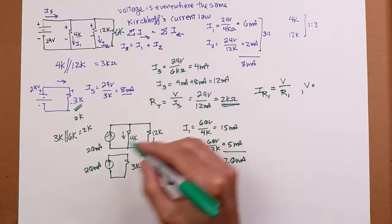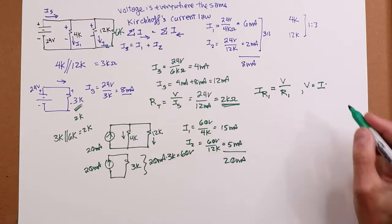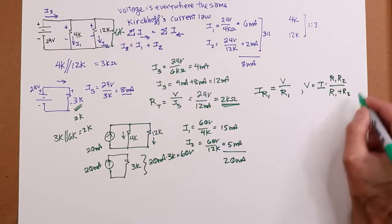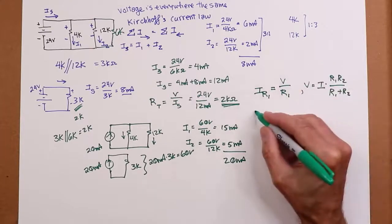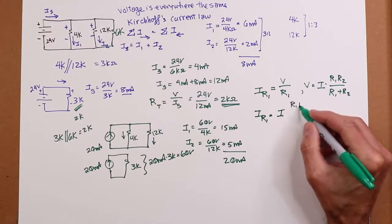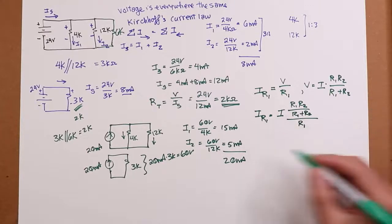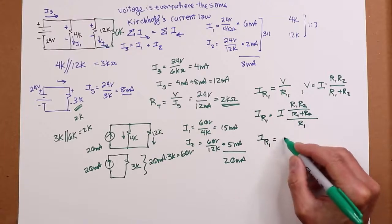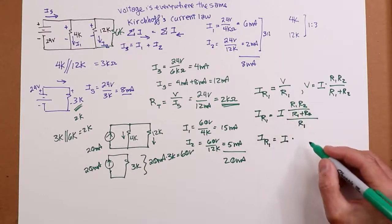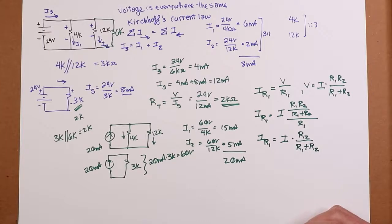V is the effective resistance times the current source. So the entering current times the parallel combo, which I'm going to write that in product sum rule form, R1 R2 over R1 plus R2. Now, if you substitute this in for V, your I of R1 works out to that current times R1 R2 over R1 plus R2, that whole thing divided by R1, which when you simplify that, I of R1 equals the entering current times, notice the R1s are going to cancel here, the opposite resistor over the sum.